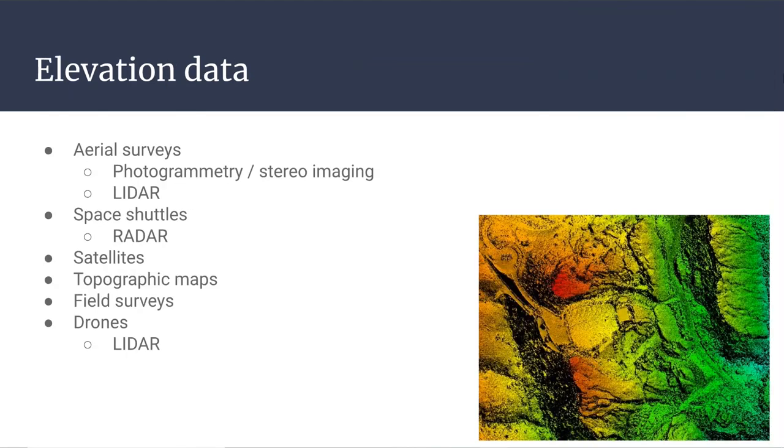So to create any of these types of data models, either contour lines or DEMs or TINs, you have to ultimately obtain some sort of primary data about elevations along Earth's surface. There have been many ways that these models have been created over time and that the data has been collected to create these different types of models.